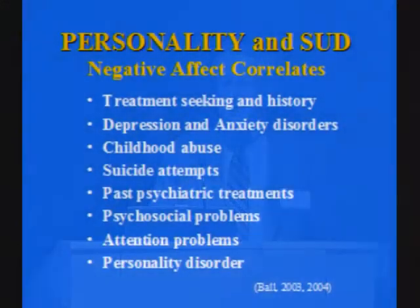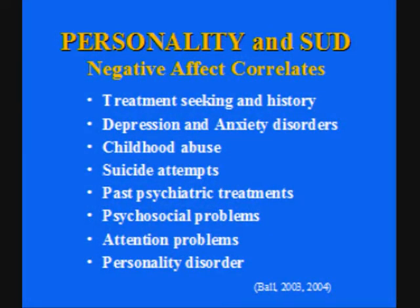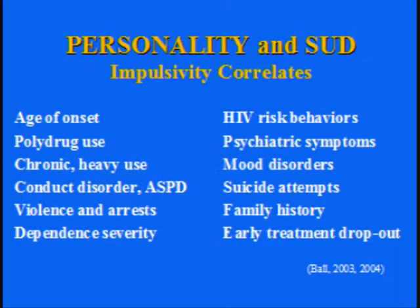Some work done a while ago attempted to look at two different core problems within substance use, and found somewhat different clinical correlates of patients who have primarily negative affect problems. You can see from this list that these are primarily problems in the psychological domain. In contrast, when you look at the impulsivity or disinhibition correlates, you see some psychological correlates as well, but also a mixture of psychiatric problems, substance abuse problems, and other kinds of historical narratives.